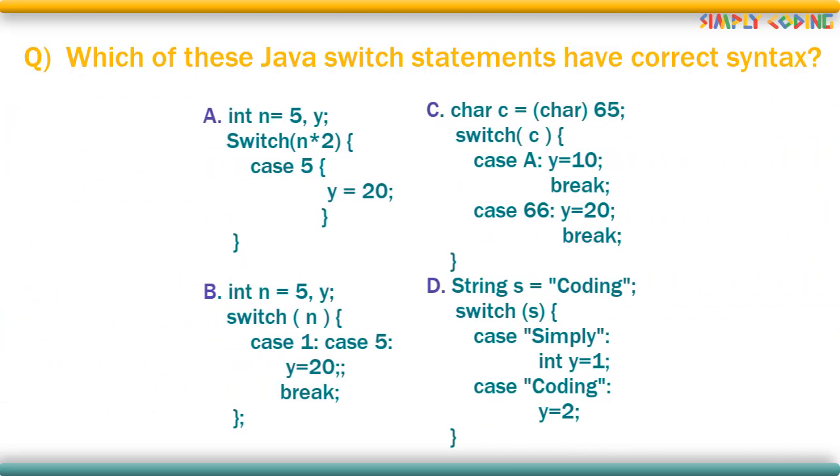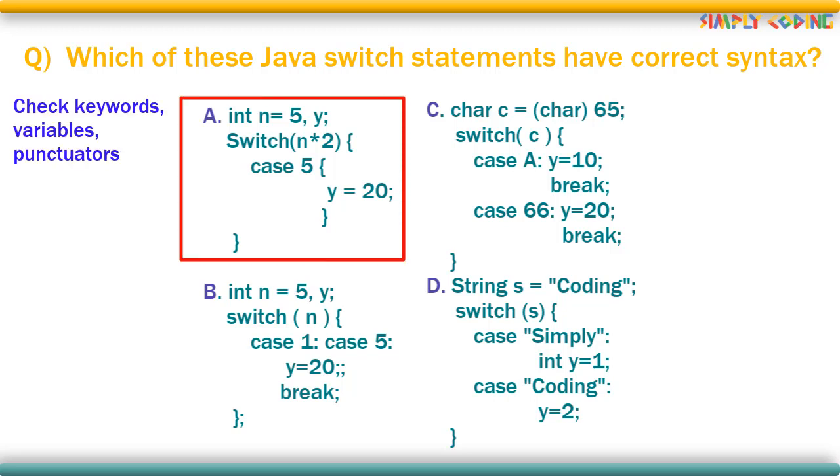Like in these statements, which of them have correct syntax of the switch statement? The first thing to check is if all the keywords such as switch case are present and all are in small letters. Also check variables are named as per variable naming convention, and there is no missing punctuation. Like here switch has capital S, which is an error. There is no colon also here after the case statement.